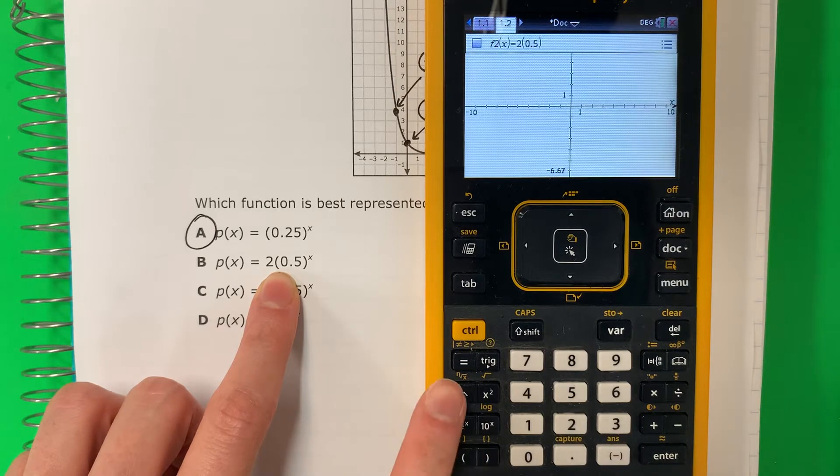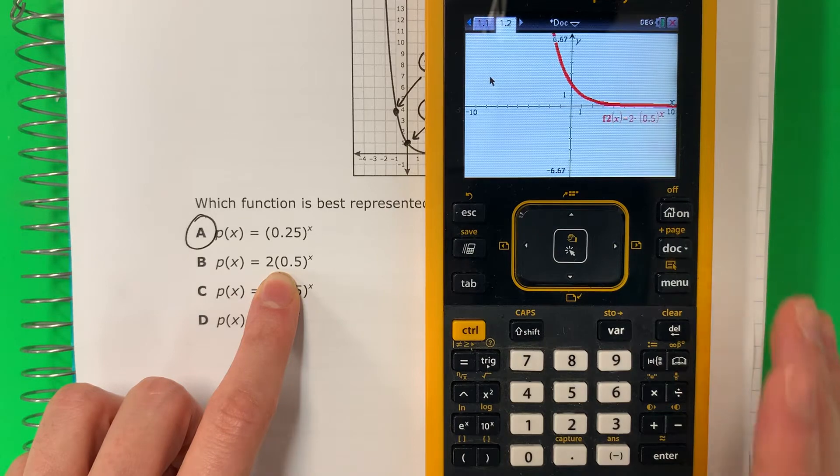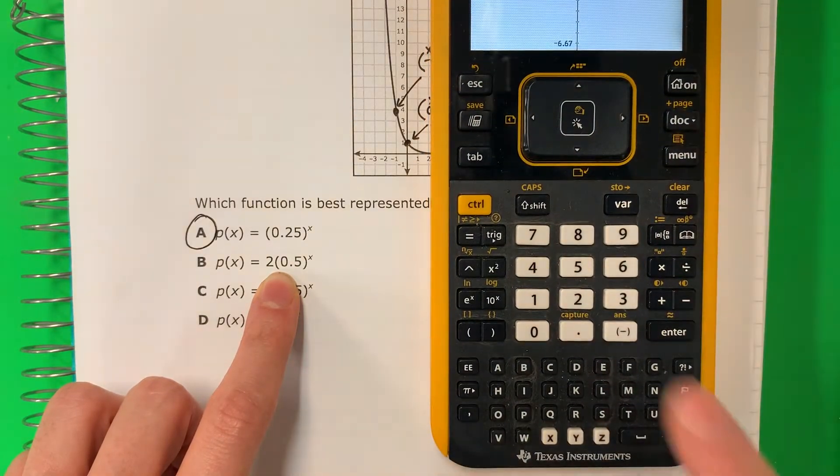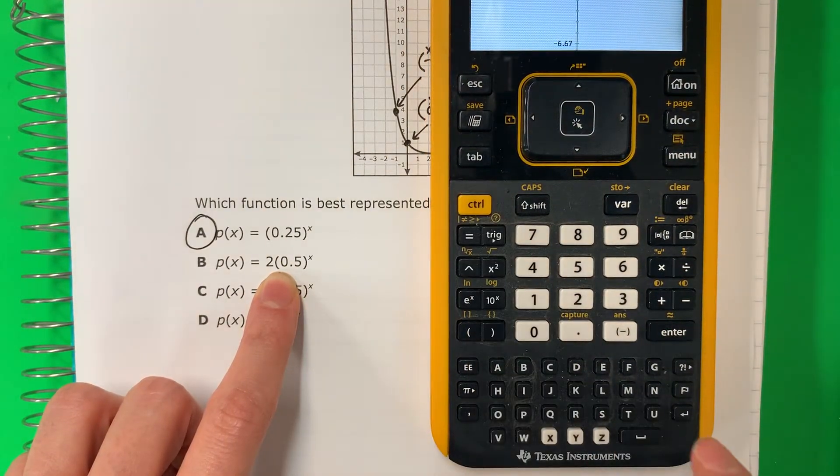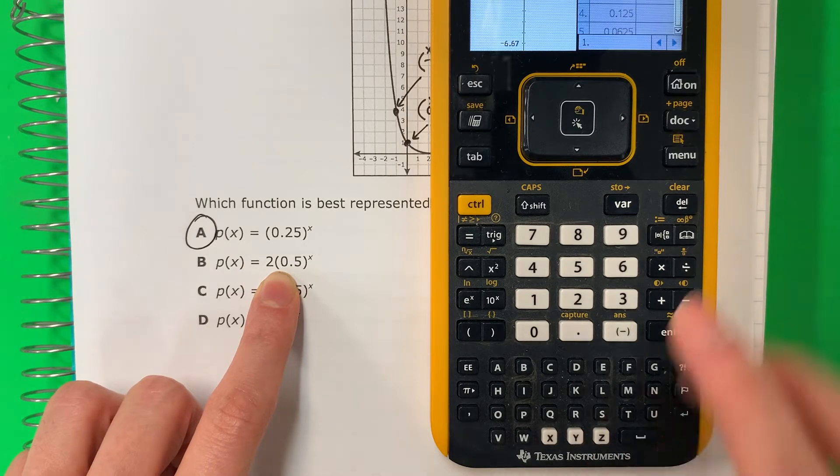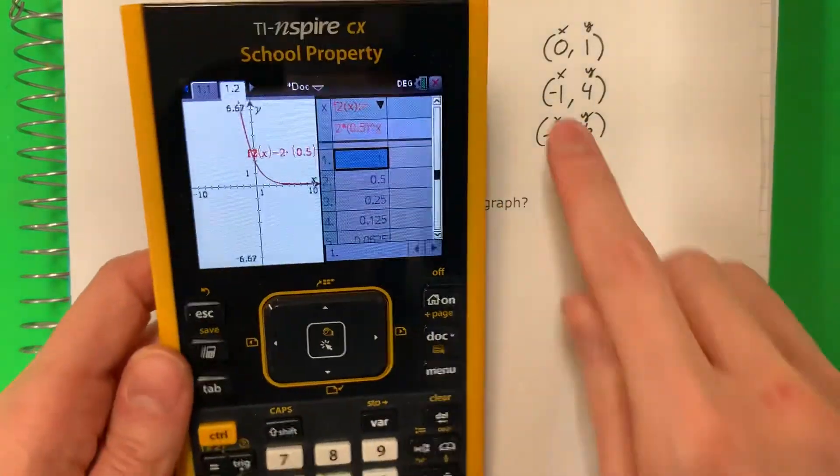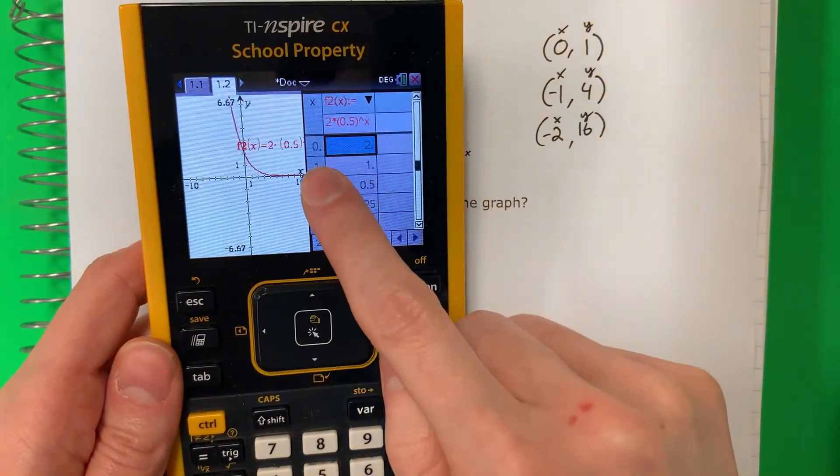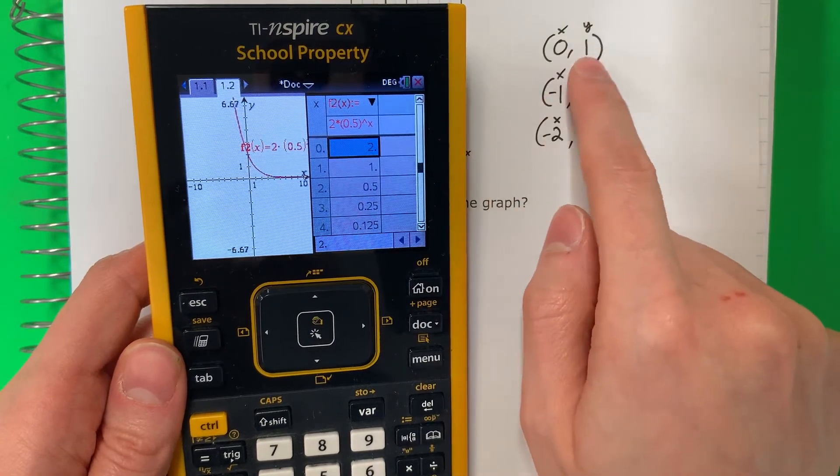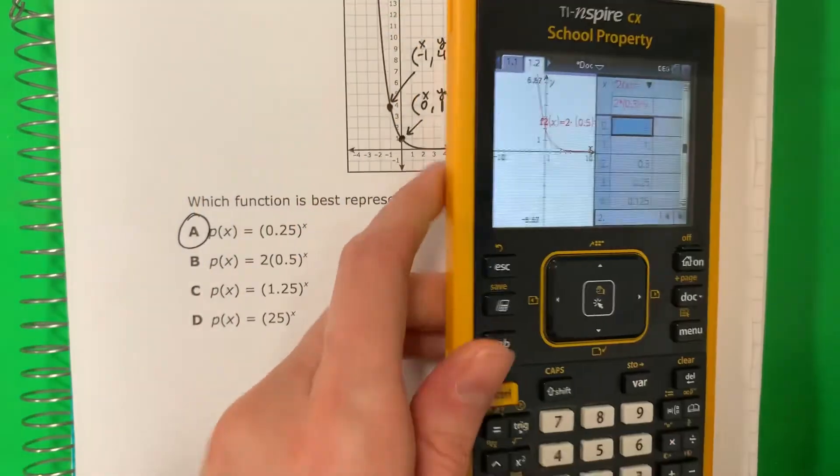The exponent is here. X. Enter. To make the table. Control T. Let's check. Go up. Zero, one. No. This is zero, two. It's different. So this is no good.